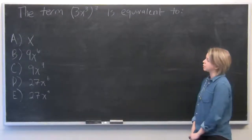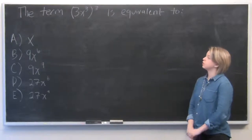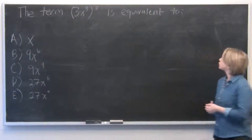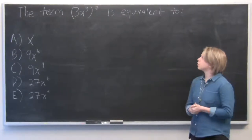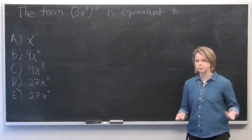So our question here reads, the term (3x³)³ is equivalent to, and then it gives us a list of answer choices. So what we're going to do is use simple exponent rules.